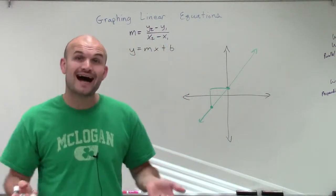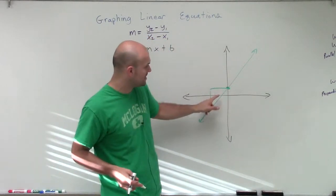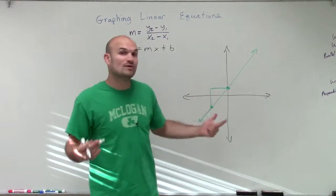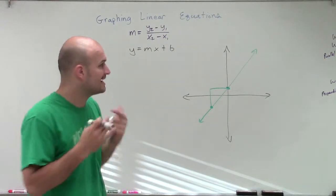And that slope is constant for a linear equation or a line on a graph. It doesn't matter what two points I pick. Your slope is always going to be the same. The change in the y-coordinates over the change in the x-coordinates is going to be constant.